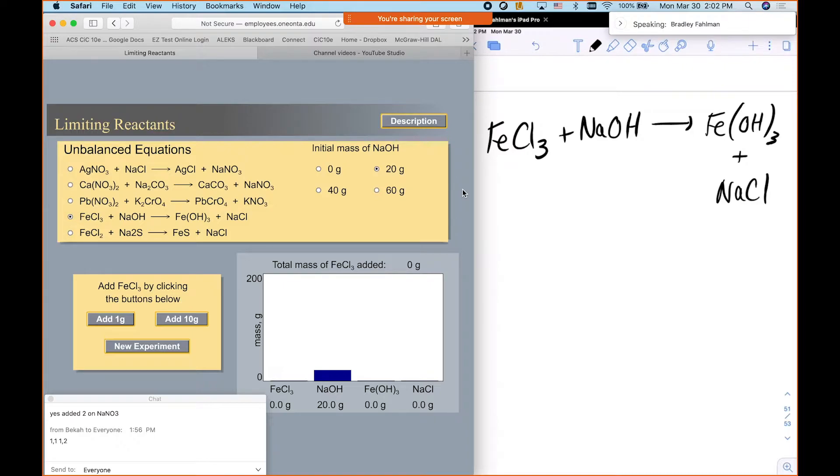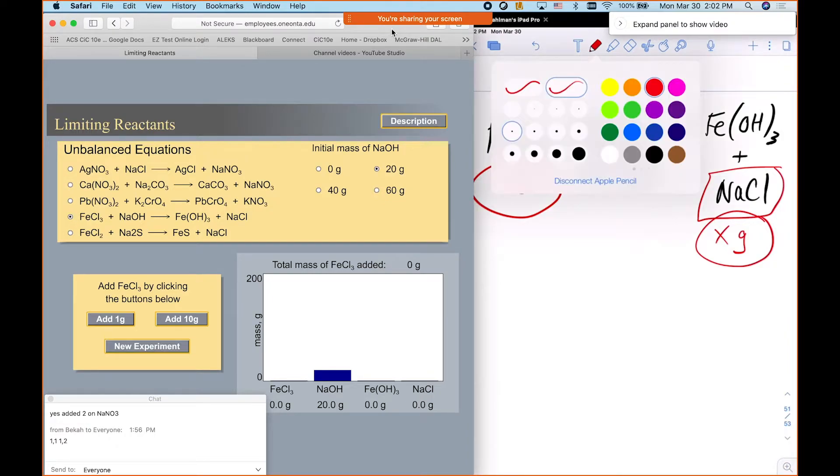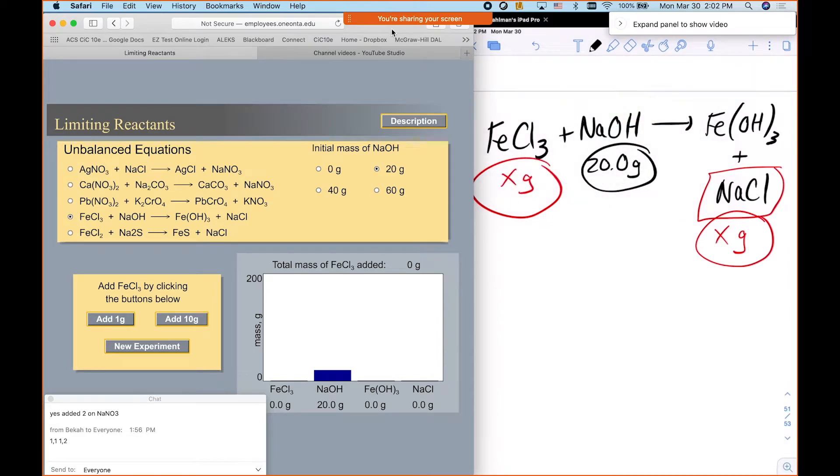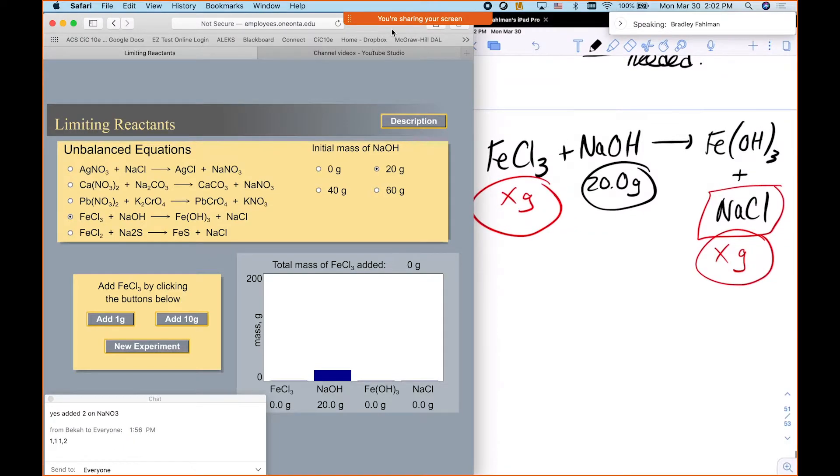So if we have that many grams, I want you to calculate a couple things. I want you to calculate how many grams of that you need to react. And then I want to know how much of this is going to be produced. And then I want you to calculate how much of this is going to be produced, sodium chloride.